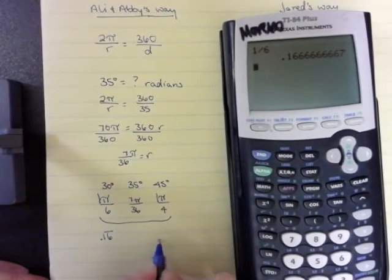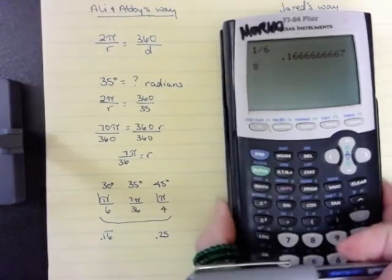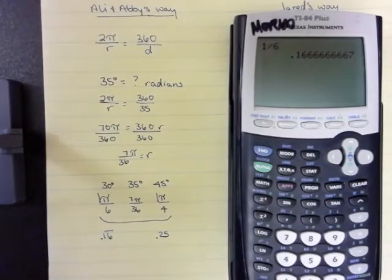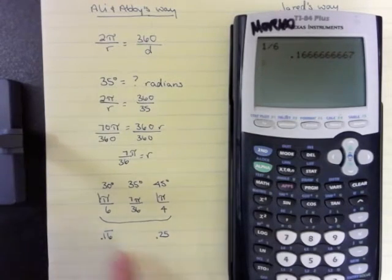And I know that 1 fourth, I don't have to put that on my calculator, is 0.25. So we're going to hope that 7 over 36 is between these two numbers.